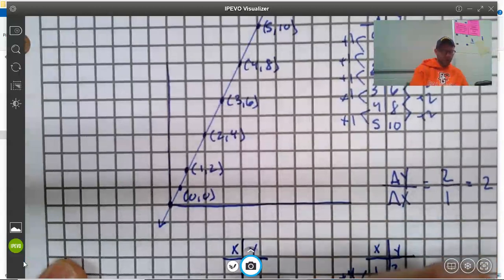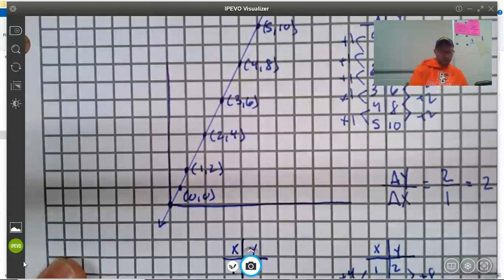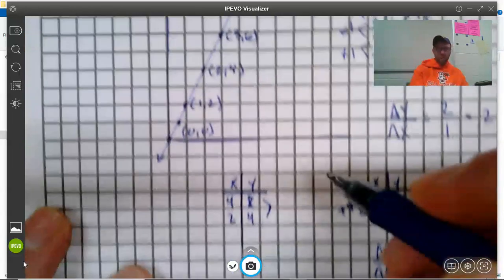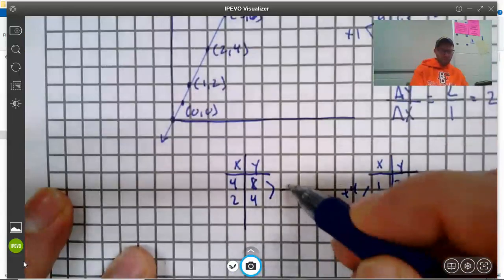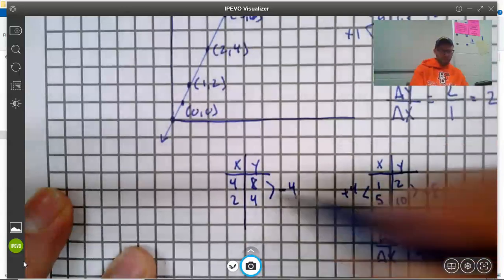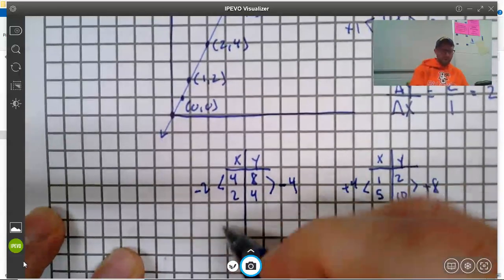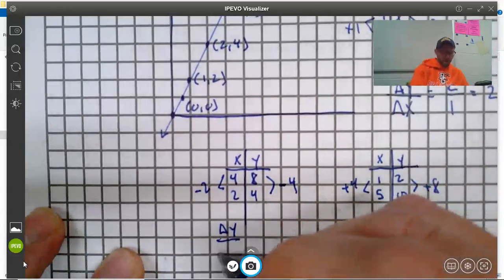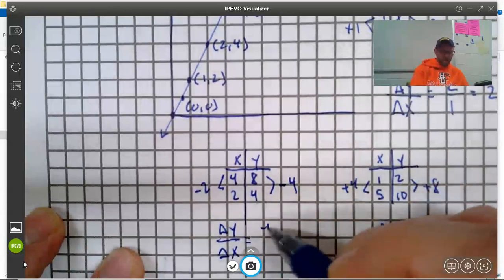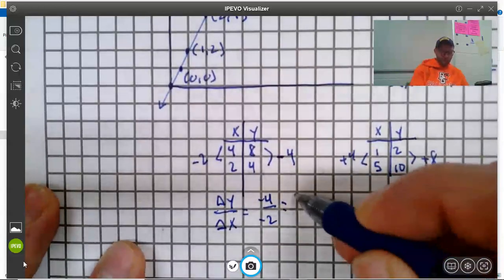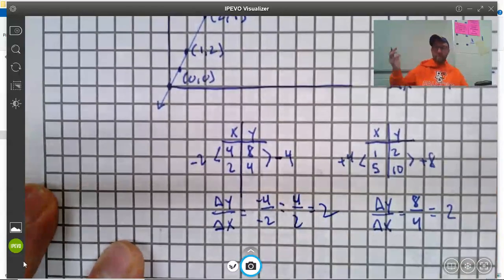So, x, y, I'm going to go from 4, 8 to 2, 4. So, here, my change in y, I'm going from 4, 8 to 2, 4. My change in y is down 4. It's a negative. And my change in x is down 2. Alright. So, then, do my calculation. Change in y divided by change in x is negative 4 over negative 2. And those two negatives cancel each other out. And I just end up with 4 over 2, which is, again, 2.